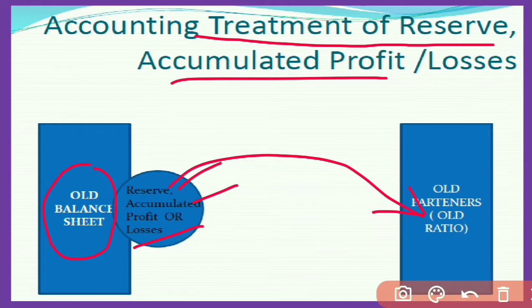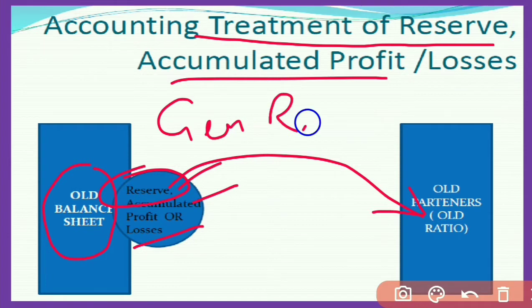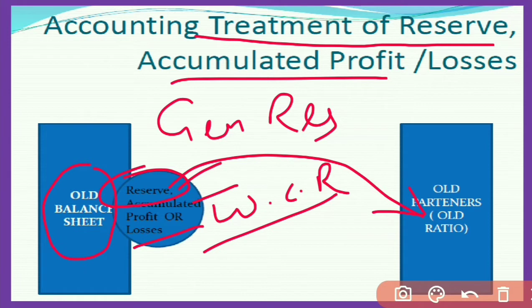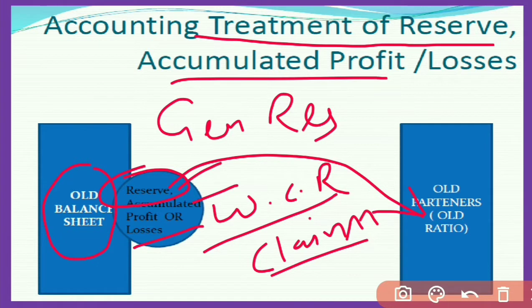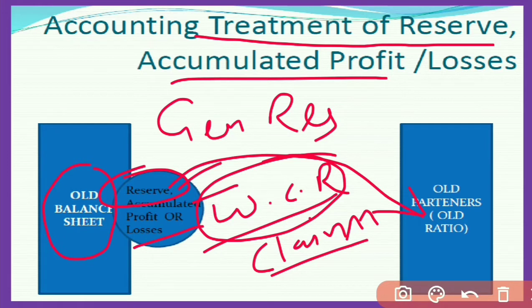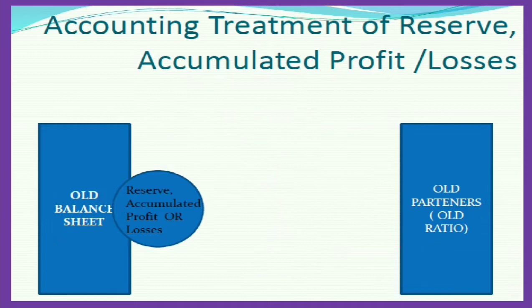Whatever amounts are given in reserve — such as general reserve or any specific reserve — if there is any specific reserve such as workman compensation reserve existing in the balance sheet at the time of admission of a new partner, and there is no claim against such reserve, then all the amount of this reserve is also distributed among old partners in their old profit sharing ratio. Let's see the entries.